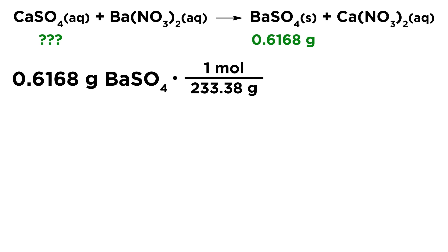First of all, whenever we do stoichiometry, we know we don't want mass, we need moles, because moles allow us to do stoichiometry. So 0.6168 grams of barium sulfate times one mole over 233.38 grams, that's the molar mass of barium sulfate. That is going to give us 0.002643 moles.